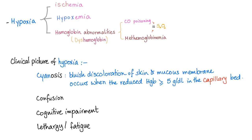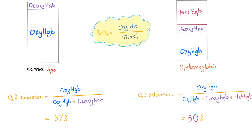Oxygen saturation is the oxygen on the hemoglobin. Clinical picture of hypoxia: cyanosis — bluish discoloration of skin and mucous membranes — occurs when reduced hemoglobin exceeds 5 g/dL in the capillary bed. You also get confusion, cognitive impairment, and fatigue. Normally, SpO2 = oxyhemoglobin / (oxyhemoglobin + deoxyhemoglobin) ≈ 97%. In methemoglobinemia, the denominator includes methemoglobin, so SpO2 can drop to around 50% — which is horrible.